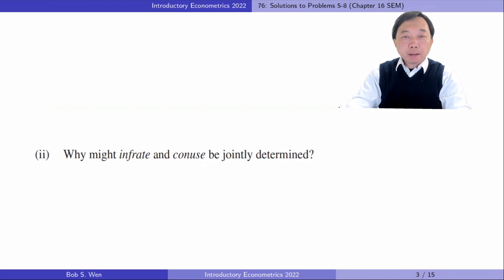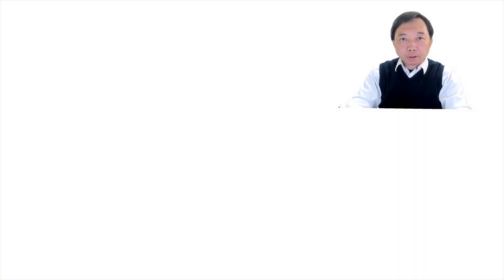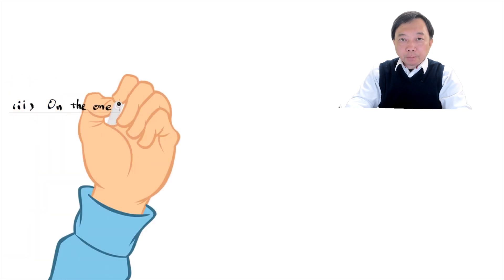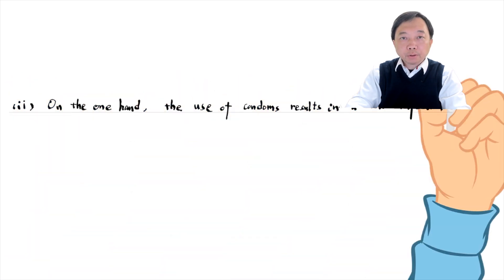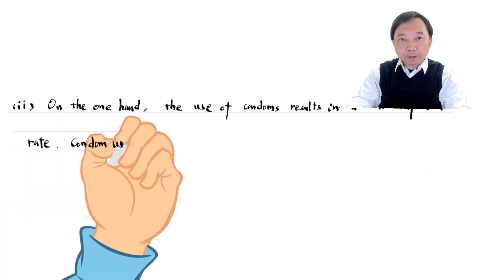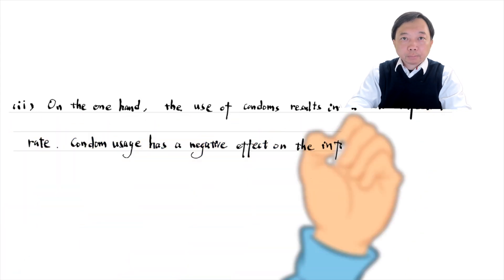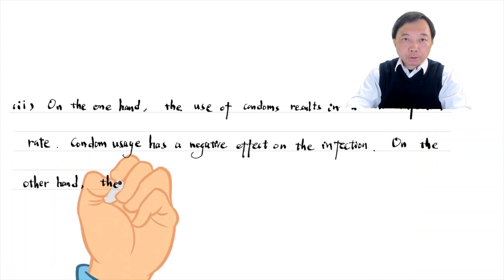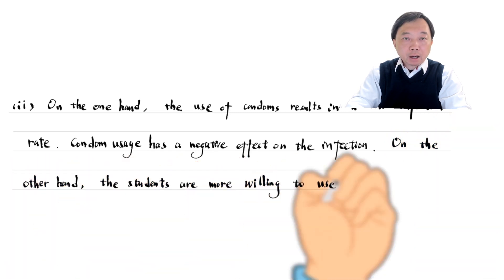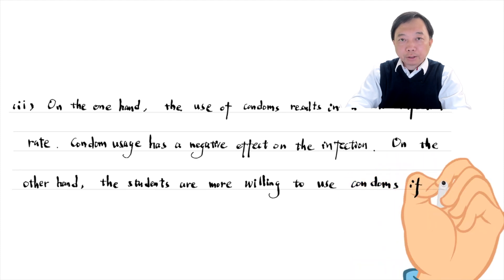In part two, why might the infection rate and condom usage be jointly determined? On the one hand, the use of condoms results in a low infection rate. Condom usage has a negative effect on the infection. On the other hand, the students are more willing to use condoms if they are aware of a higher infection rate.